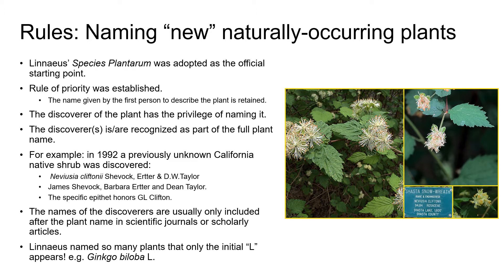If we were to write out the name of this shrub in its entirety, we would write Nebiusia Cliftonii, Shevuk, Erta, and D.W. Taylor. The three names appearing after the species name acknowledge the people who first officially described this plant: James Shevuk, Barbara Erta, and Dean Taylor. A plant name is usually only written out in its entirety like this in scientific papers and botanical literature, but it's something you may come across and it's important to know why these names appear and what they mean.